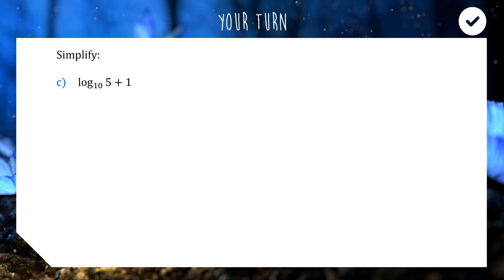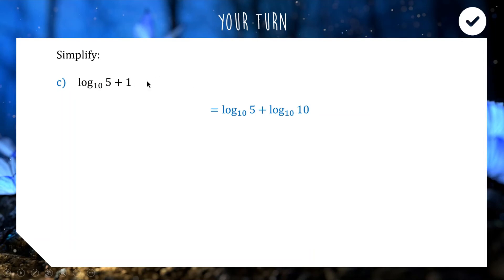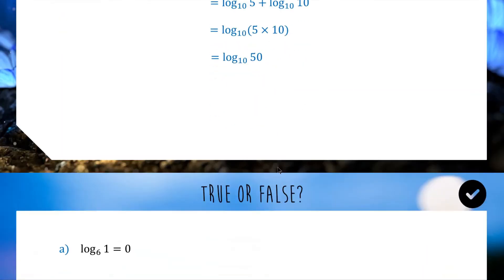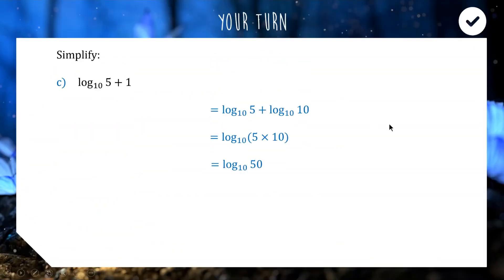For the trick question: log base 10 of 5 plus 1. The issue is that 1 is not a logarithm, so we need to write it as one. We write 1 as log base 10 of 10, because when the base and subject match the answer is 1. Now we have two logarithms with the same base that are adding, so we multiply subjects: log base 10 of 5 times 10, giving log base 10 of 50. This isn't a nice whole number, but that's the simplified form.